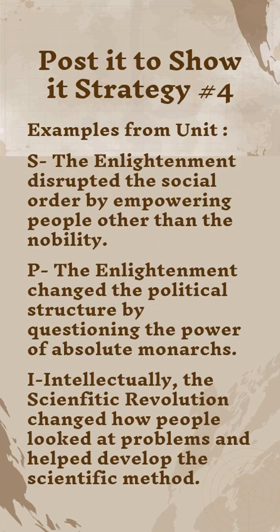For S, which is social: the enlightenment disrupted the social order by empowering people other than the nobility. P, the political: the enlightenment changed the political structure by questioning the power of absolute monarchs. I, intellectually: the scientific revolution changed how people looked at problems and helped develop the scientific method. This allows students to reinforce their learning covered in class to ensure they understand the scientific revolution and the enlightenment.